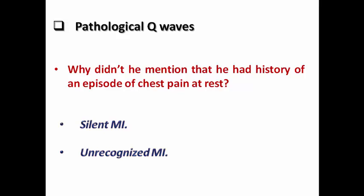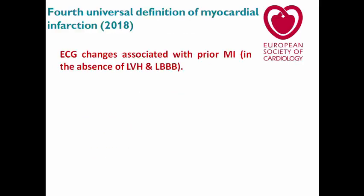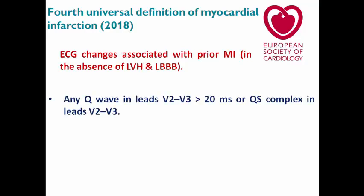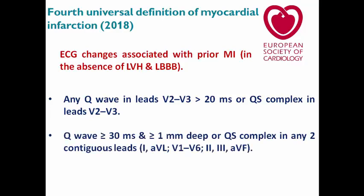The problem is that sometimes the MI may be silent, as in patients with diabetes due to autonomic neuropathy, or may be unrecognized — the patient doesn't remember having significant chest pain and that's why he didn't report it. In the fourth universal definition of myocardial infarction released in 2018, the ECG changes associated with prior MI in absence of LVH or left bundle branch block include any Q wave in leads V2 or V3 more than 20 ms, or QS complex in leads V2 or V3.